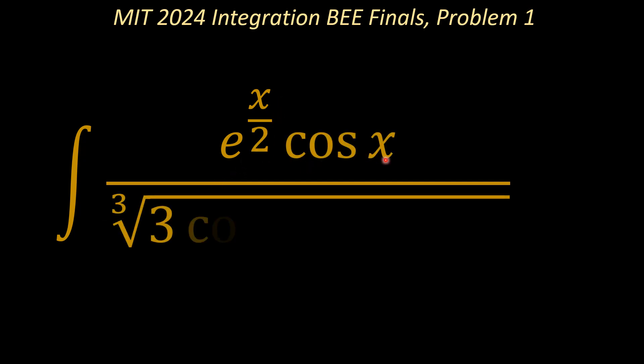So today we look at the MIT 2024 integration BEE finals, and we look at problem number 1. So this problem is the integral of e to the power x over 2 cosine x over the cube root of 3 cosine x plus 4 sine x.